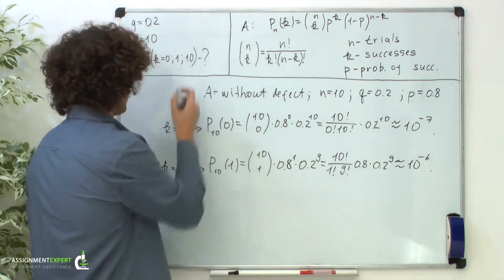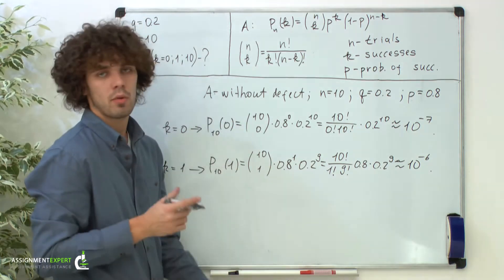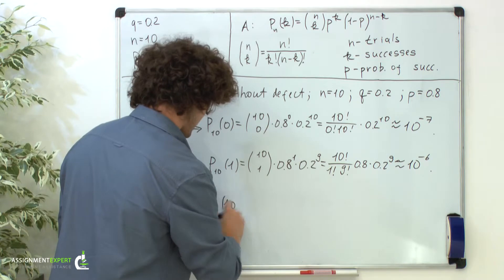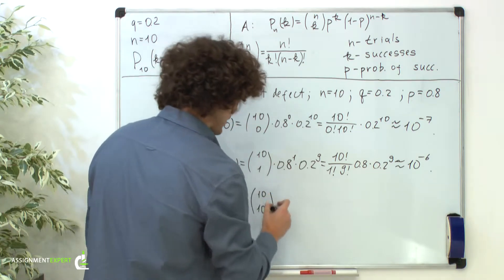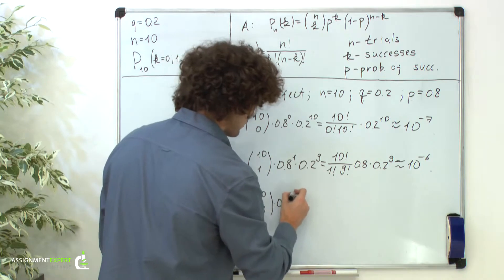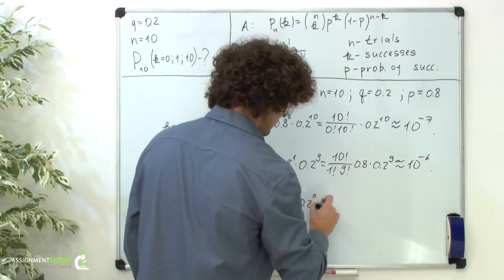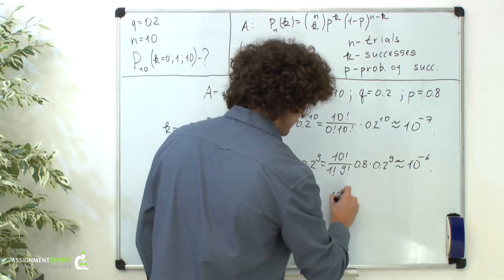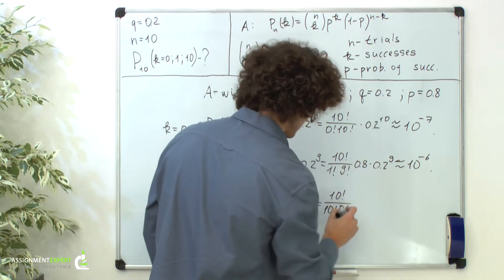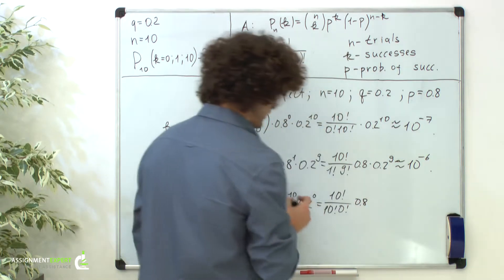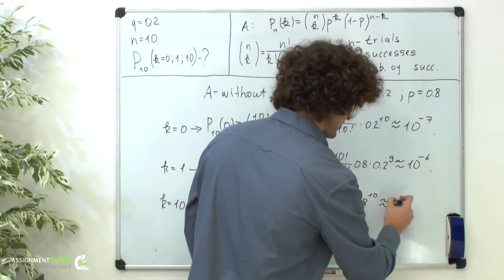And now the last case: k equals 10, which means that all of the details are without defects. The probability of 10 successes out of 10 trials equals 10 choose 10, times 0.8 raised to the 10th power, times 0.2 raised to the power of 10 minus 10, which is 0. This gives us 10 factorial over 10 factorial times 0 factorial, times 0.8 raised to the 10th power. That term gives us 1, so the result is approximately 0.1.